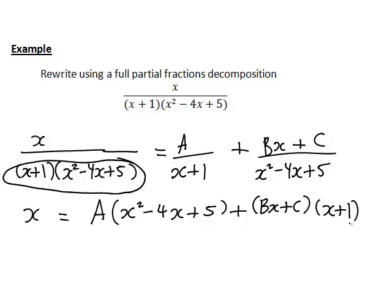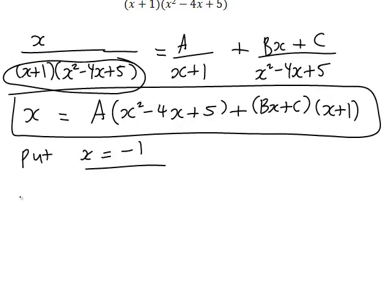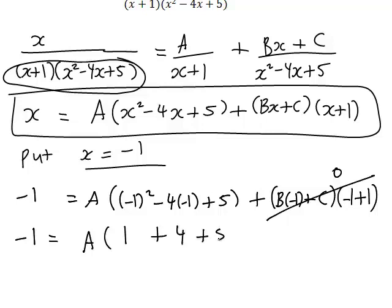Now, if there are linear factors we can look for a value of x that makes them go to zero, since any value of x satisfies this expression. For the factor (x plus 1), putting in x equals negative 1 will be helpful. On the left that gives negative 1, and on the right the second term vanishes since (negative 1 plus 1) equals zero, leaving negative 1 equals a times (1 plus 4 plus 5), so negative 1 equals 10a, and therefore a equals negative one tenth.